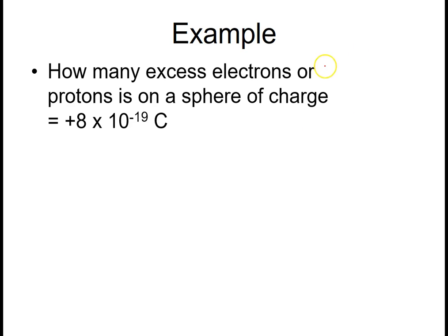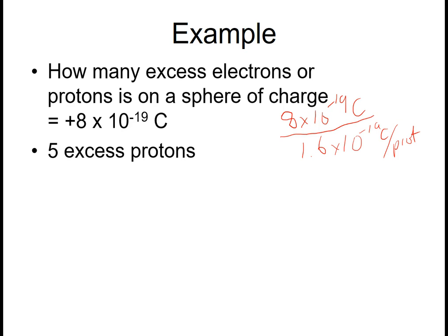So to figure this out, it's pretty straightforward. We're just going to take the charge, 8 times 10 to the negative 19, that's the total excess charge. We'll divide by the charge of one proton, which is 1.6 times 10 to the negative 19 Coulombs per proton. And that's going to give us 5. So there's 5 excess protons.